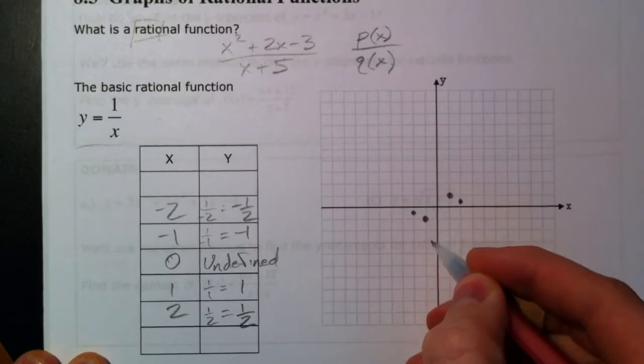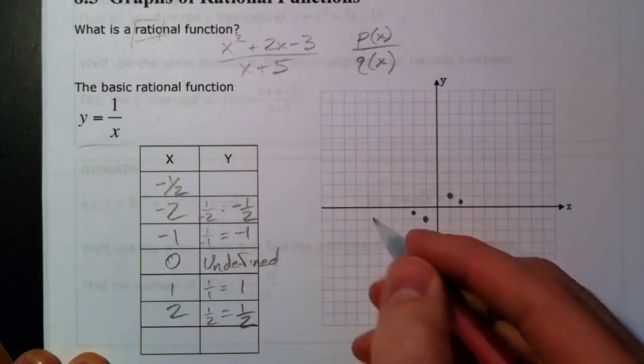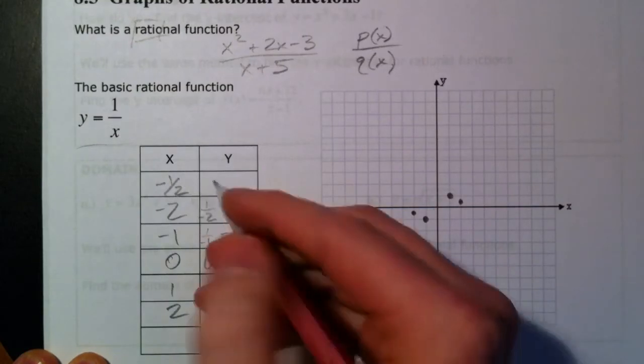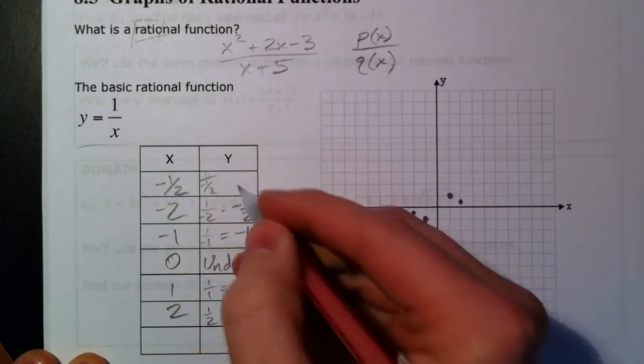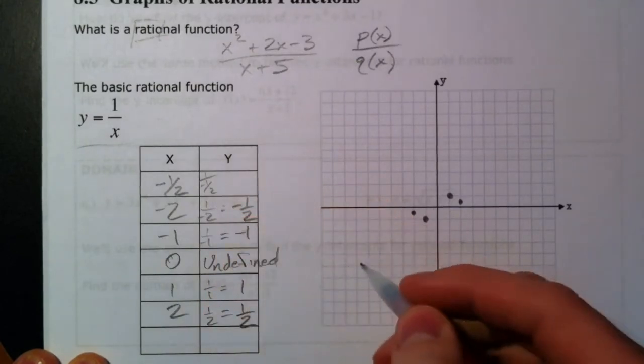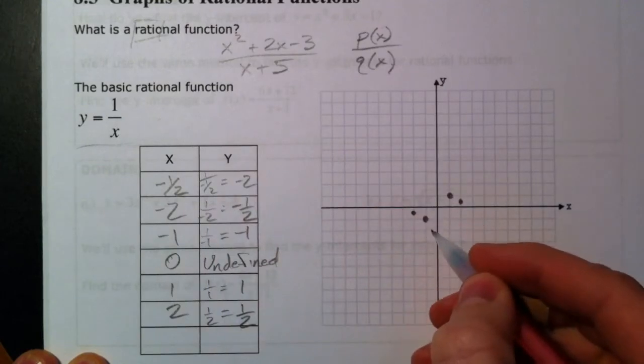And so we could actually pick a point over here. Let's pick negative 1 half. 1 divided by negative 1 half is actually going to be 1 times negative 2. You've got to multiply by the reciprocal. And so you get negative 2 here. And so you can see the pattern.